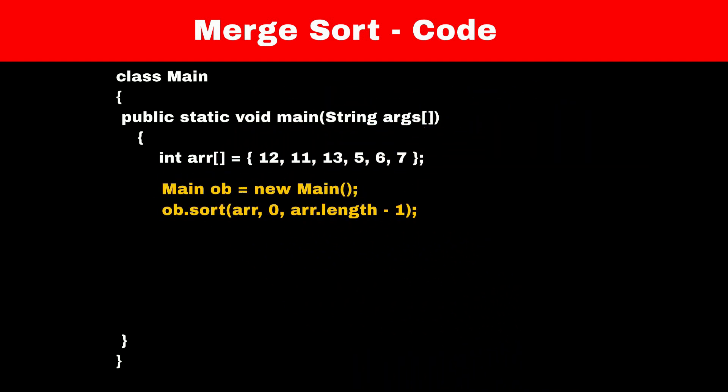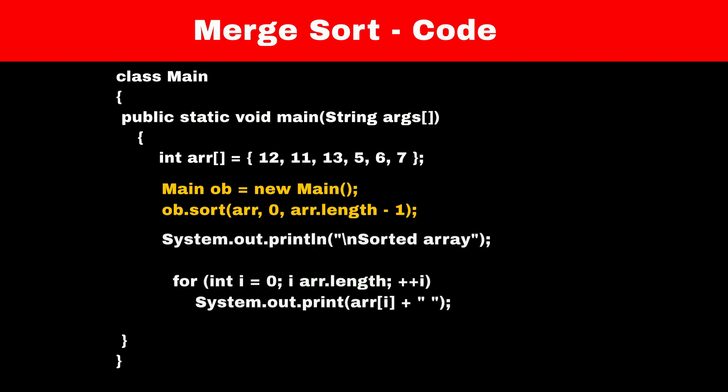This function will take 3 parameters. First is array itself and then second is start of array and the third is end of array. Initially start will be 0 and end will be length minus 1, and after sorting we will print array.